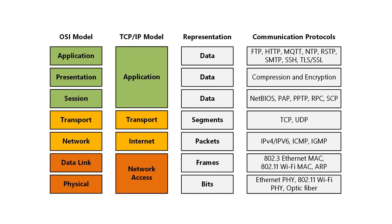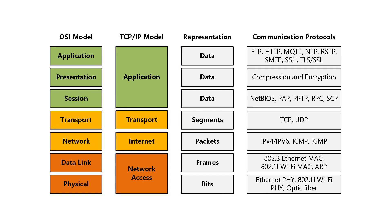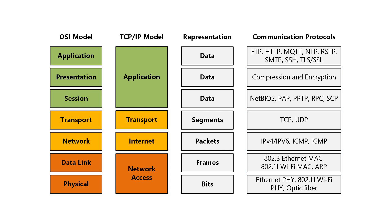Each layer in both the OSI and TCP/IP models describes how different types of data — such as bits, frames, packets, segments, etc. — are processed at that layer of communication. The specific role of each layer determines how data is formatted, encapsulated, and transmitted across the network. The OSI and TCP/IP models are like blueprints. The real implementation of each layer is called a communication protocol, and you may know some or all of the example protocols listed in this diagram.